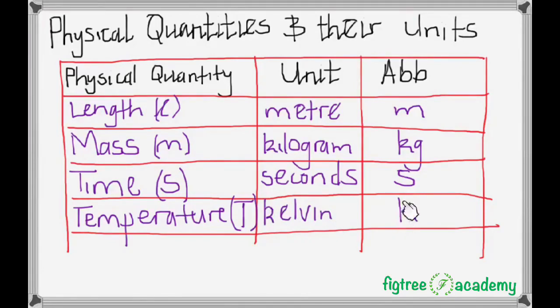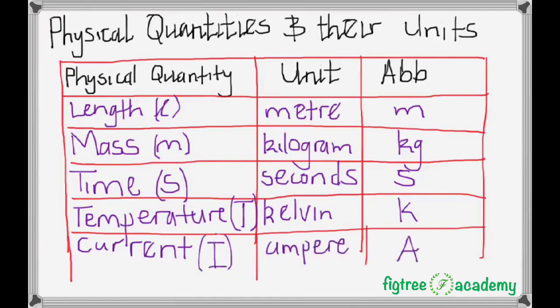And the next physical quantity from temperature is current, which is symbol I, and its base unit are the amperes, abbreviated A.